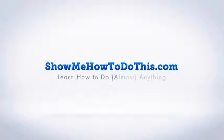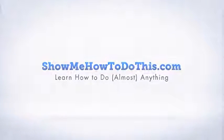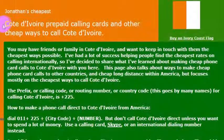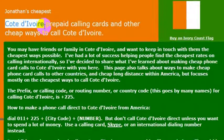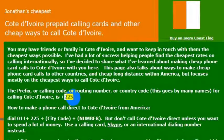I have not spoken French in 10 years, probably, and my French is going to be terrible. But if you wanted to call Côte d'Ivoire, otherwise known as the Ivory Coast, it's quite simple. All you need to do is know the country code: 225 — that is the country code for the Ivory Coast.